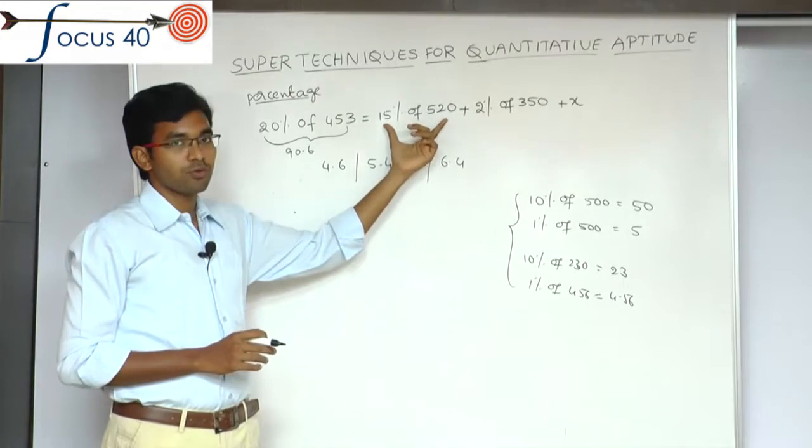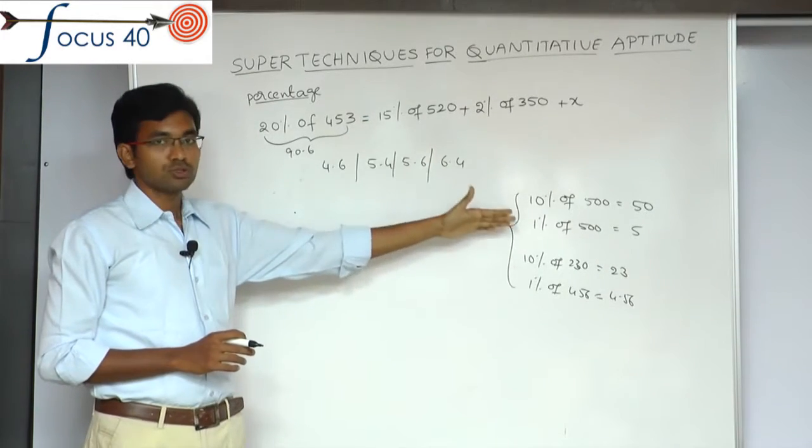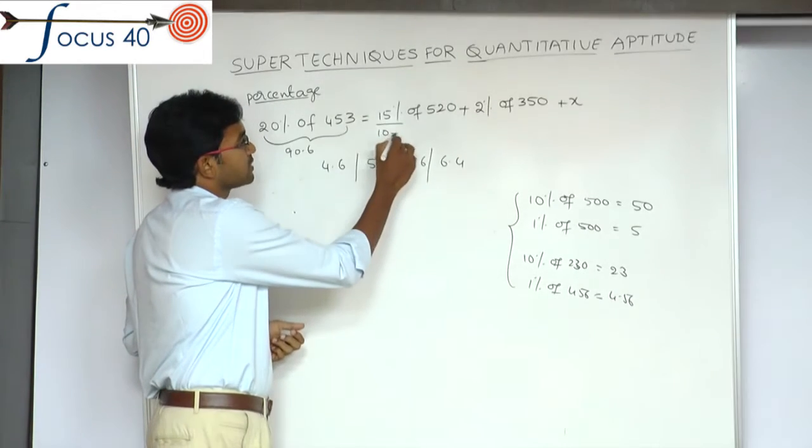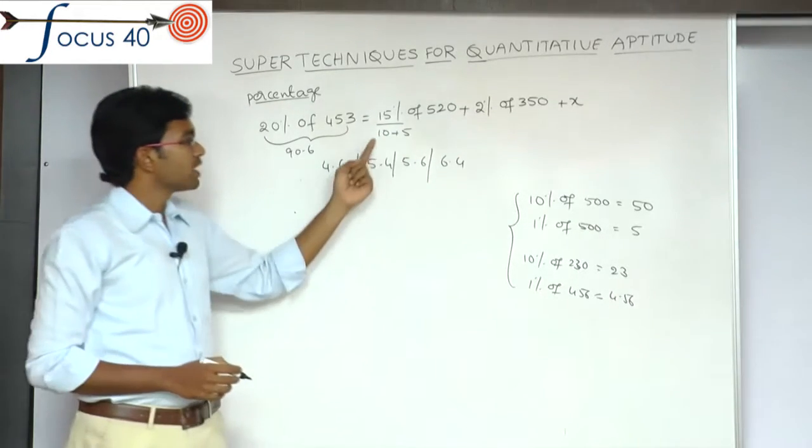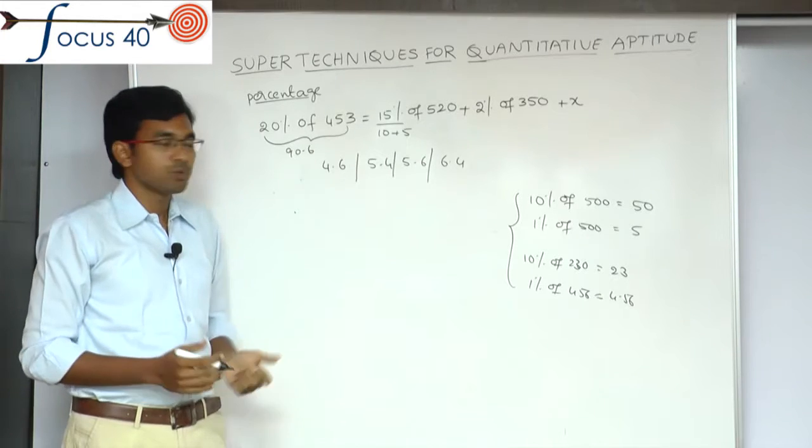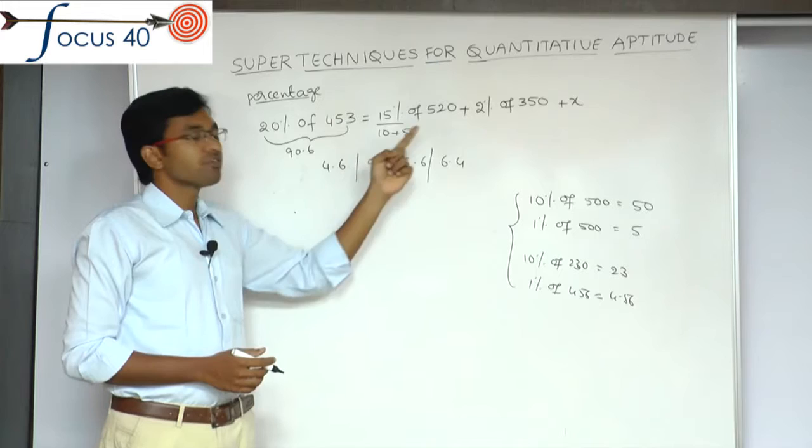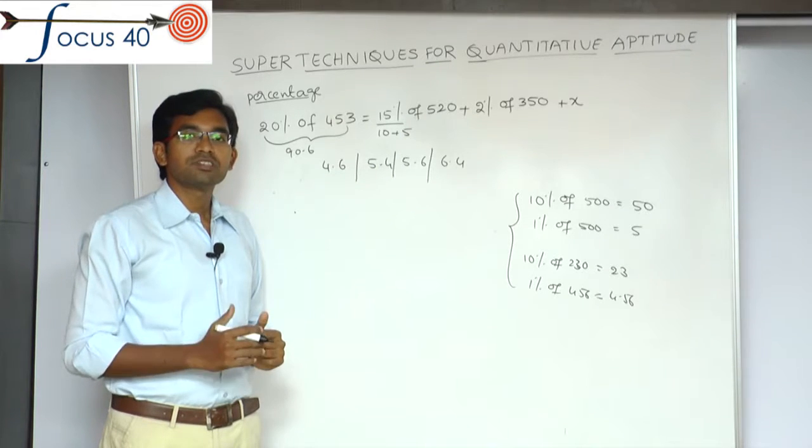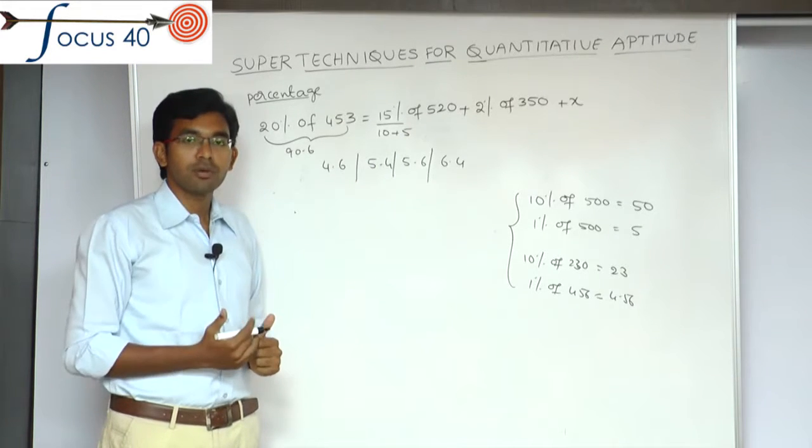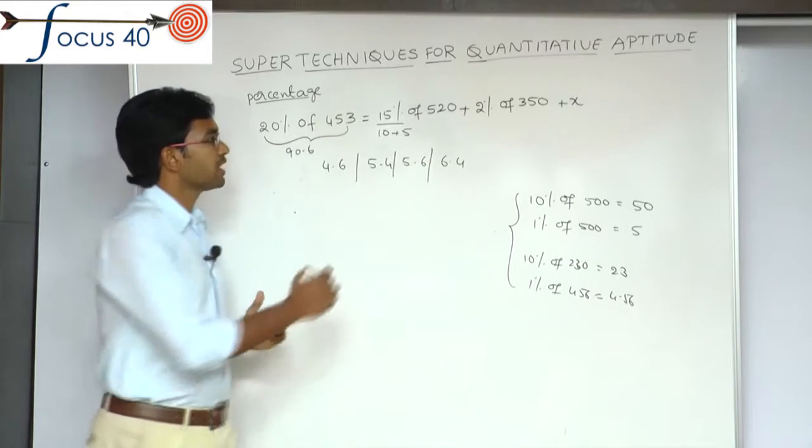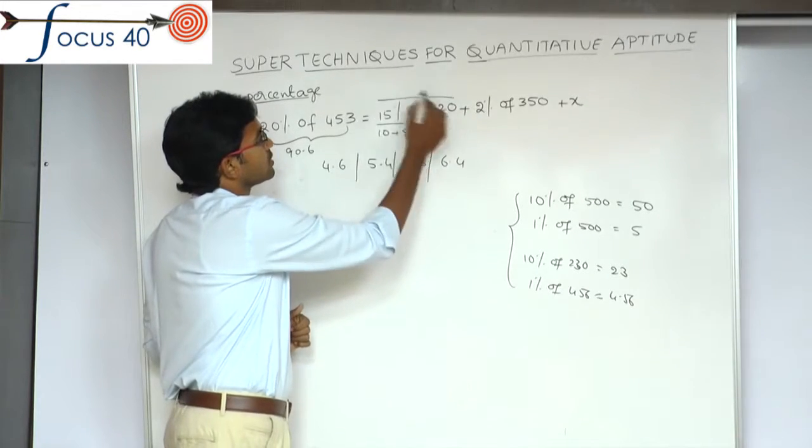Next, 15% of 520. We can write 15% as 10 plus 5. What is 10% of 520? 52. What is 5% of 520? Since 10% is 52, 5% is half of that, which is 26. 52 plus 26 is 78. So this part will be 78.